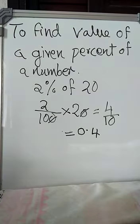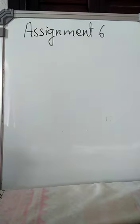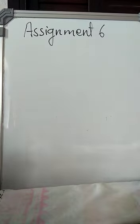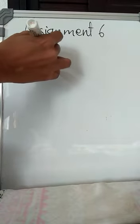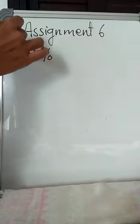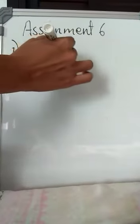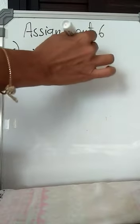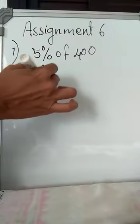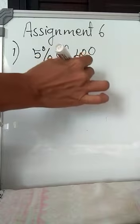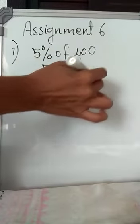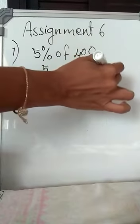Now let us do assignment 6 based on this. So assignment 6, the first question. So here you have to find percent of a number. The first question is 5% of 400. So that will be 5 by 100 into 400. That is a zero cut. So 5 into 4 is 20.